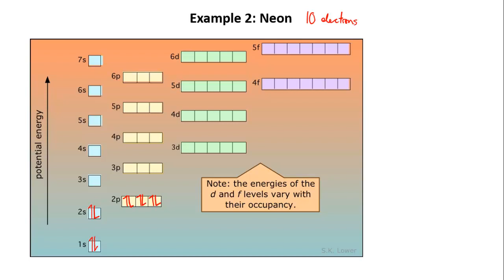The shorthand for the electron configuration is then written 1s² because there are two electrons in the 1s orbital, 2s², two electrons in the 2s orbital, 2p⁶ because there are six electrons in the three 2p orbitals.